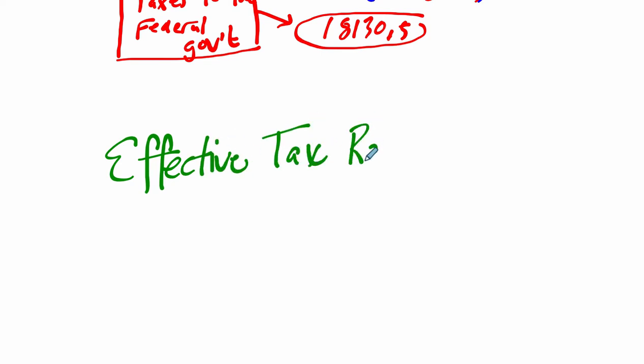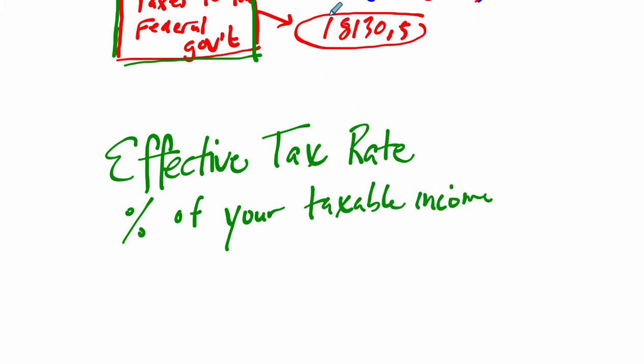This is based on the work in the previous two videos where we calculated the taxes going to the federal government. The effective tax rate tells you what percent of your taxable income you're paying. We're saying you're paying some amount in taxes—let's say this is what you're paying right here. If you're paying that amount in taxes, what percent does that number represent out of your taxable income? That's the effective tax rate.